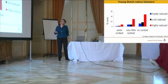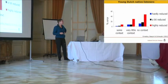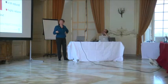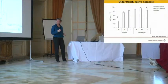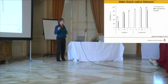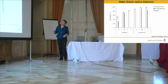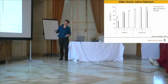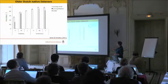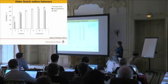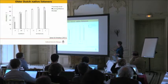We replicated this experiment with two other groups of listeners. We replicated it again with young, healthy listeners just to verify, and we got the same results, though depicted differently. Now you see the percentage of accuracy — highly reduced, medium reduced, and low reduced — both when words were presented in isolation and in sentences. Again, people were better at recognizing words presented in sentences than in isolation, and better with unreduced words than highly reduced ones.